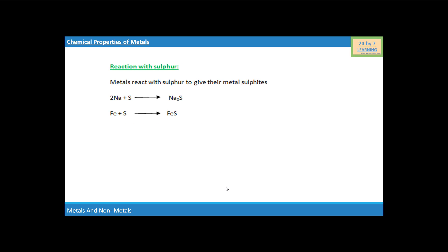Now we come to the reaction of metals with sulfur. Metals react with sulfur to give their metal sulfides. You can see sodium metal when it reacts with sulfur then it will form Na₂S, i.e. sodium sulfide.